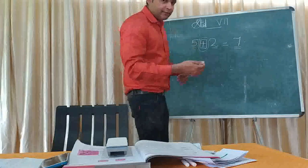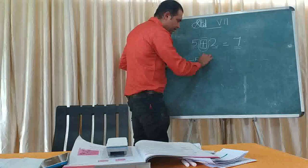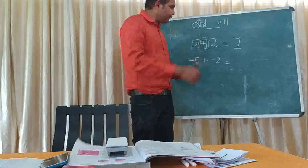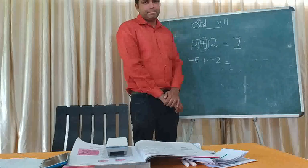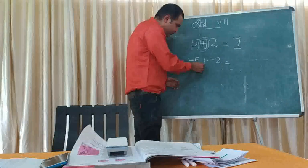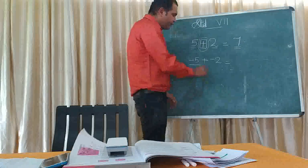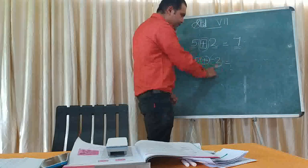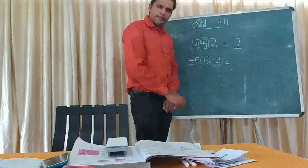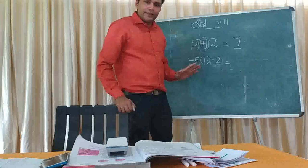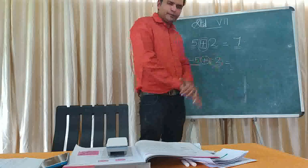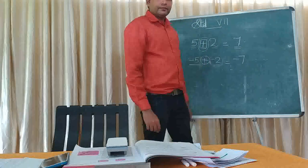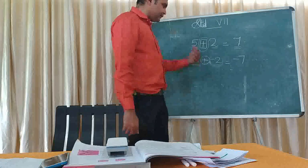Let me explain with negative numbers. Consider negative 5 plus negative 2. According to our rule, both numbers have the same sign — negative. So we add 5 and 2 to get 7, then assign the same sign — negative — to the answer. So the result is negative 7. If you know the rule, you can easily find the answer.